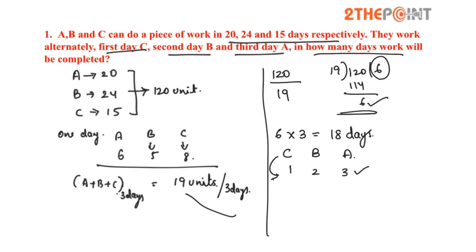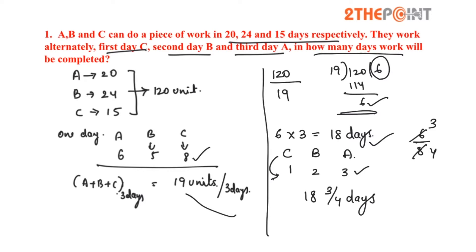C does 8 units of work, so we have 6 by 8. Simplifying: 2 threes are 6, 2 fours are 8, giving 3 by 4 days. So altogether A, B and C work on alternate days for 18 and 3/4 days to complete the work of 120 units.